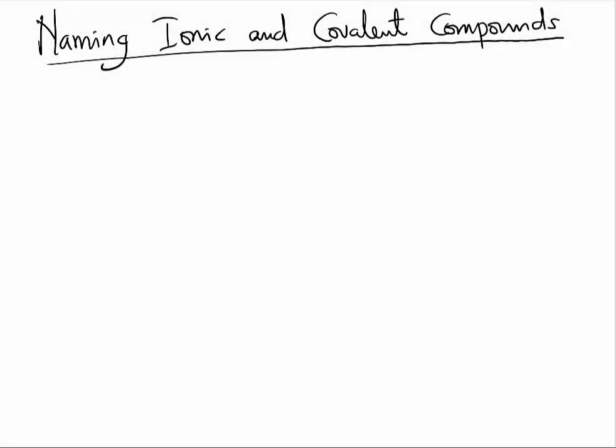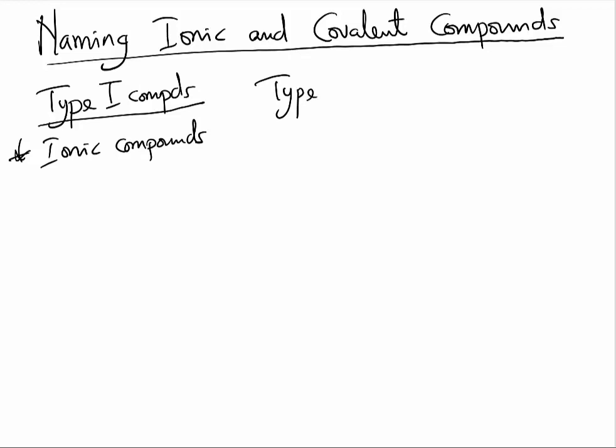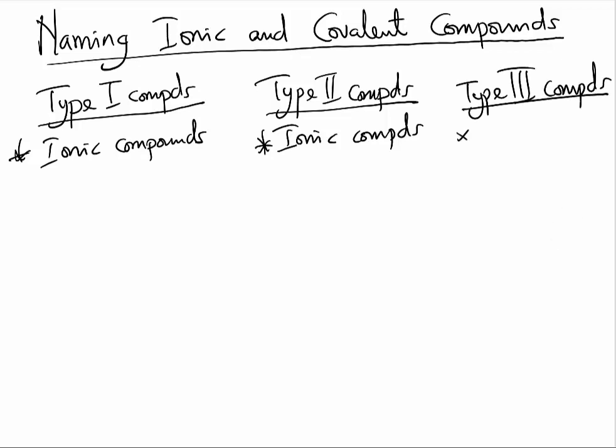Let us now learn how to name ionic and covalent compounds. To make the naming a lot easier for us, we will divide the compounds into three types. Type 1 compounds will be ionic compounds. Type 2 compounds will also be ionic compounds. While Type 3 compounds will be covalent compounds.